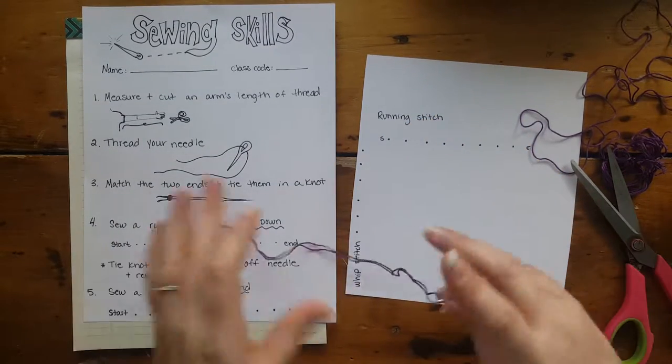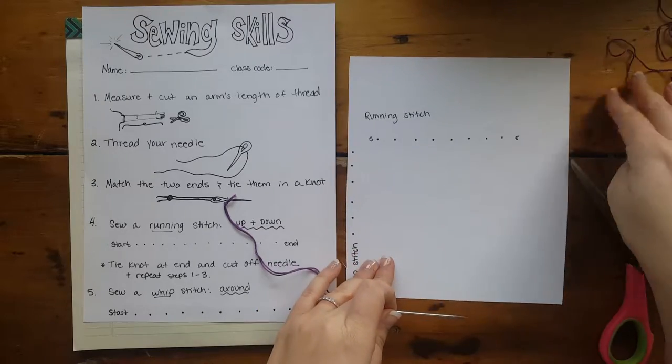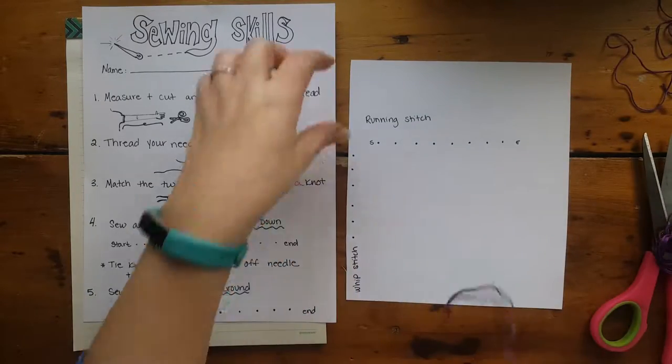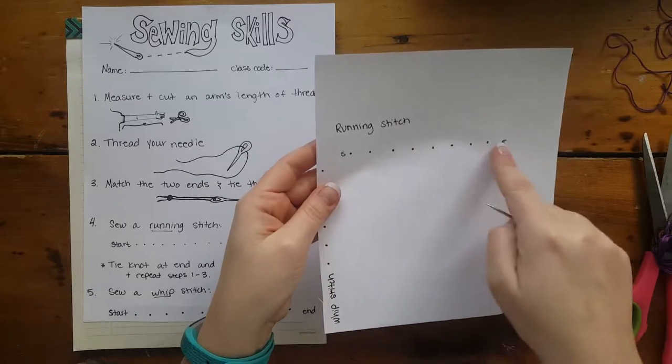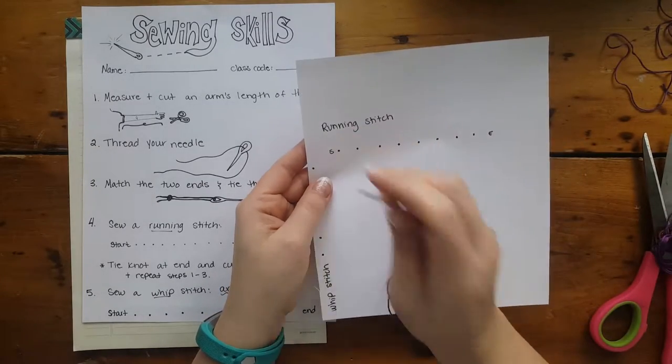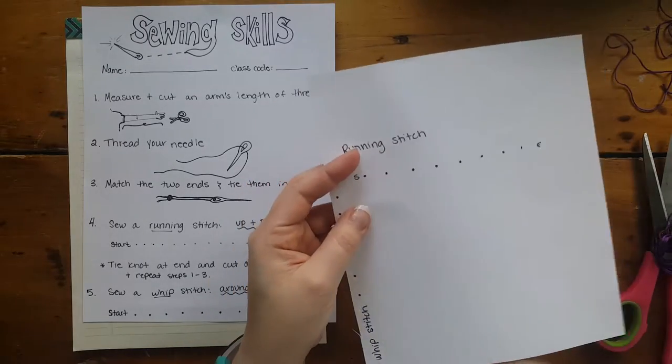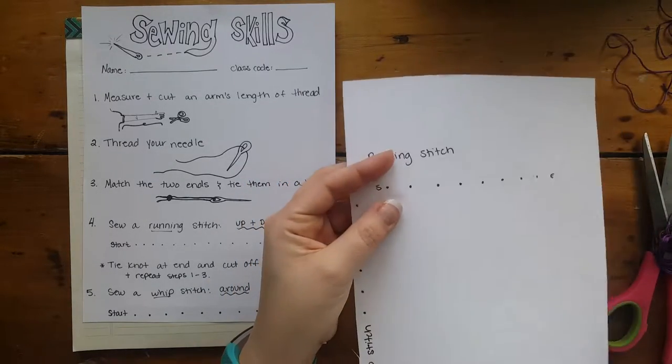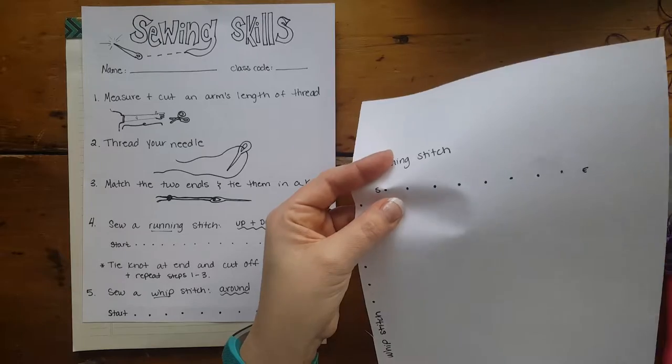Step four, we're going to sew a running stitch. Running stitch is probably the most simple kind of stitch. On the worksheet we have some dots, a start line, and an end line. You can start above, but I typically like to come from underneath, which means poking up from the bottom. This will hide your knot so it doesn't show.